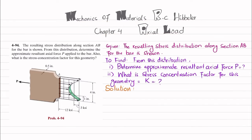So the statement is: the resulting stress distribution along section AB for the bar is shown. From this distribution, determine the approximate resultant axial force P applied to the bar. Also, what is the stress concentration factor for this geometry?